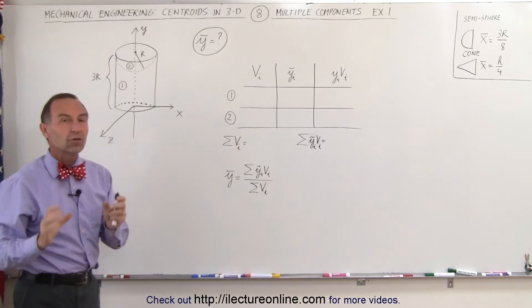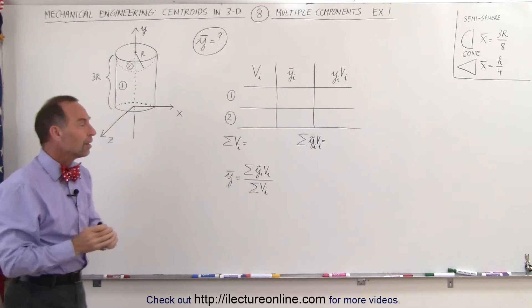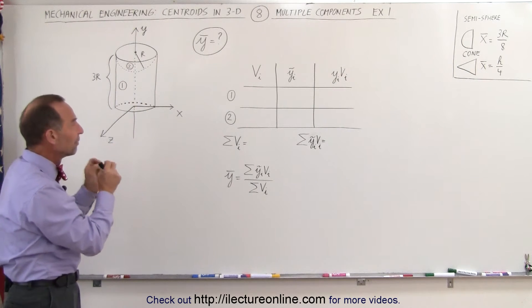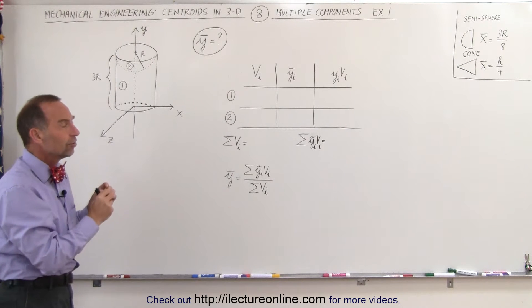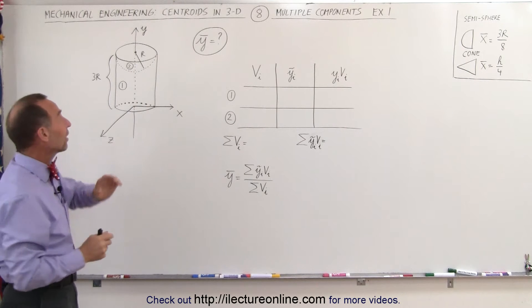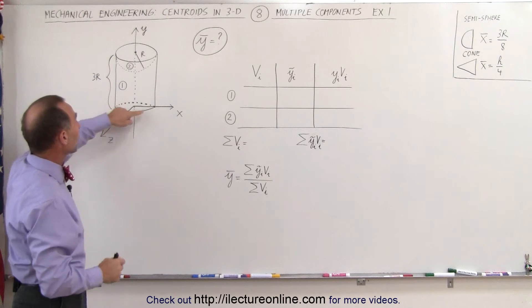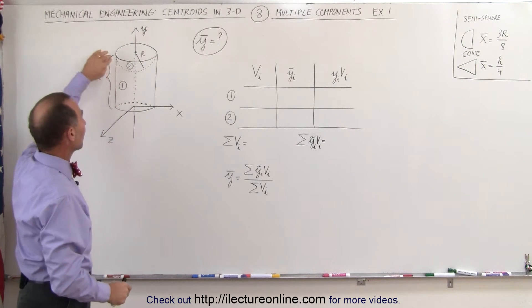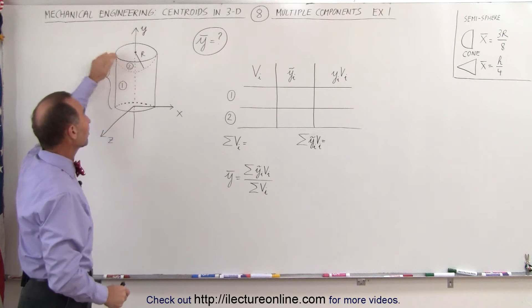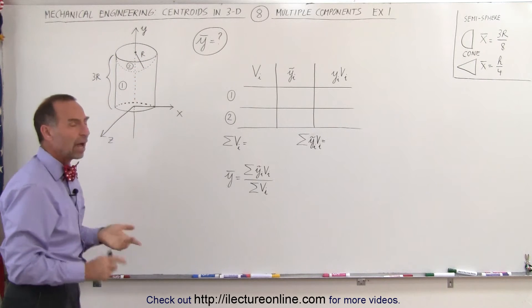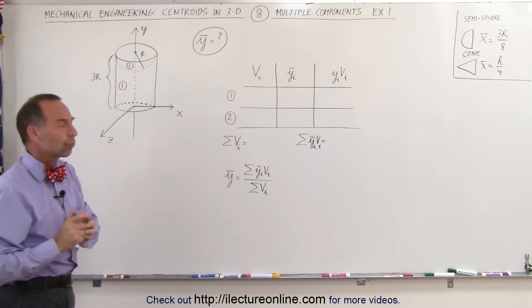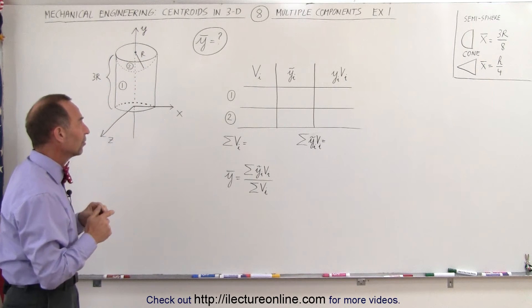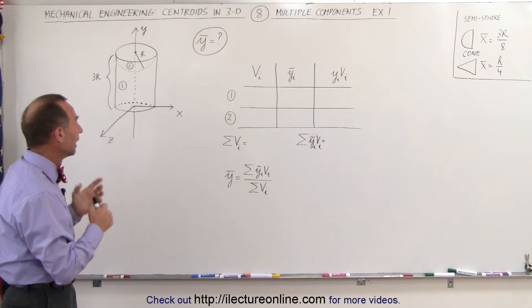We can usually subdivide these shapes into individual pieces. Notice that we can take, for example, the entire cylinder and subtract from that a semisphere. How do we find the centroid of something like this? Well, let's watch and see how we do that.